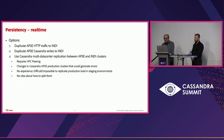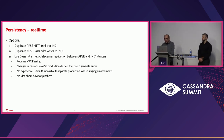Another option was to use Cassandra multi-data center replication. This would solve the network and latency issues since the writes would go only to the APSI region and allow Cassandra to take care of the synchronization. The main drawback was the potential impact on changing the APSI production clusters, plus lack of experience since we had never used this before, and no idea about how to split a multi-data center cluster into two regions afterwards.